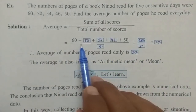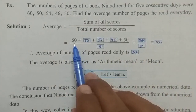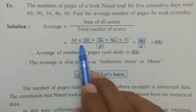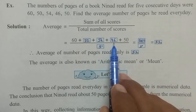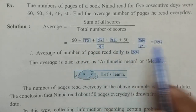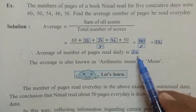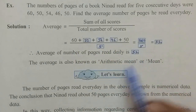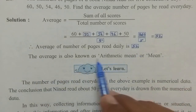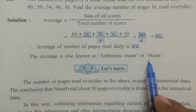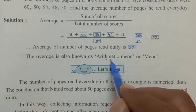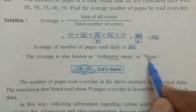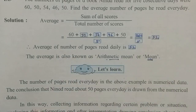If you see the scores: one day 60 pages, one day 50, one day 54, one day 46, one day 50 — but the average is 52. The average is also known as the arithmetic mean, or simply mean. Average ko arithmetic mean bhi bolte hain, nahi toh simply mean bolte hain. It was explained last year.